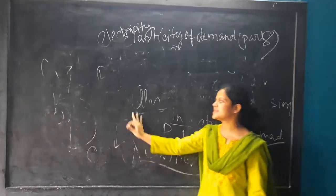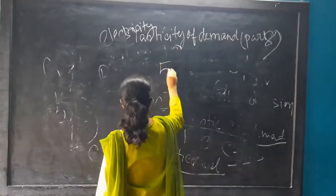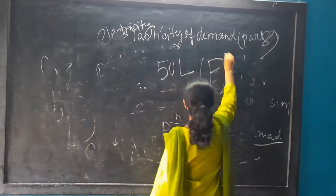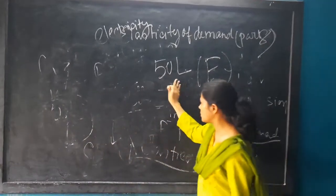When the customer is purchasing a 50 lakh flat, the government will charge more GST on it. Obviously, if 100 rupees is the price of the product, the government will charge more GST.